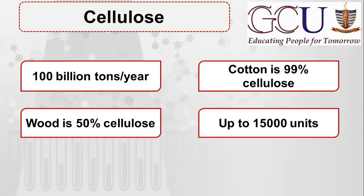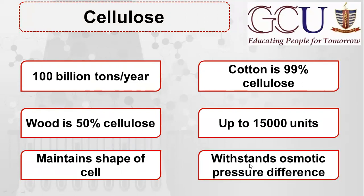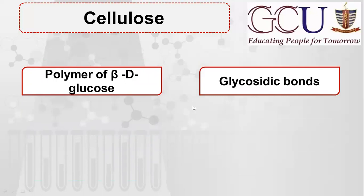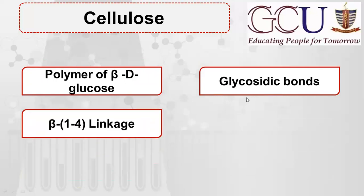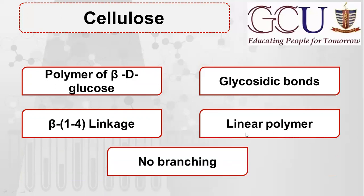Glucose molecules are condensed together to form cellulose. Cellulose is the polymer of beta-D-glucose, linked via glycosidic bonds. The only type of linkage present is beta-1-4, making cellulose a linear polymer without any branching.